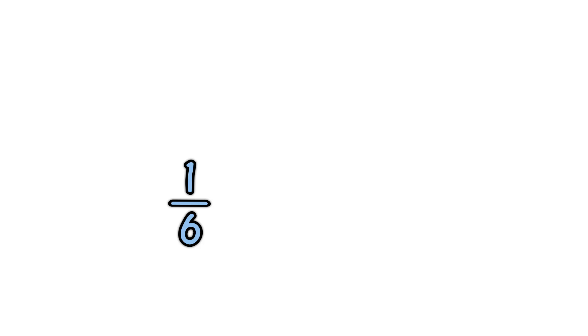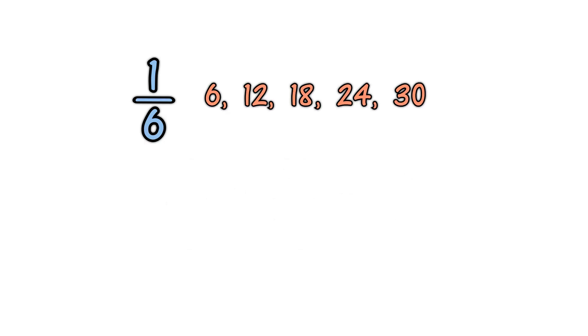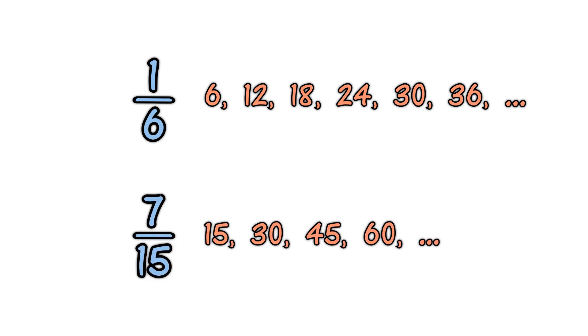Here is an example. What is one-sixth plus seven-fifteenths? The denominators are six and fifteen. Multiples of six are six, twelve, eighteen, twenty-four, thirty, thirty-six. Multiples of fifteen are fifteen, thirty, forty-five, and sixty. So the least common multiple of six and fifteen is thirty.